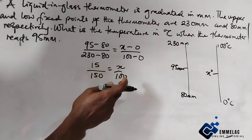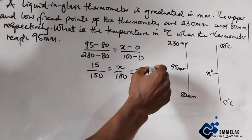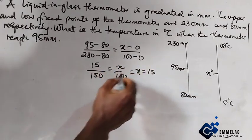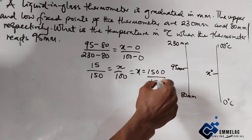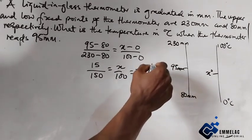When we cross multiply, we get x equals 15 times 100 over 150. Simplifying: that gives us 10.